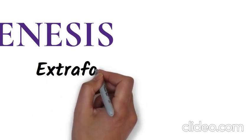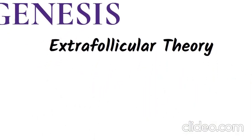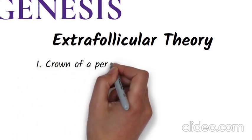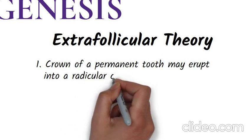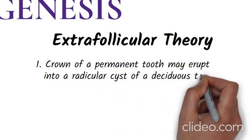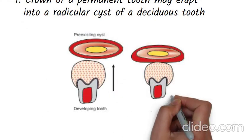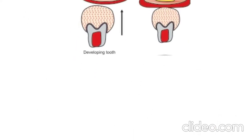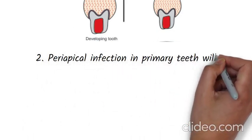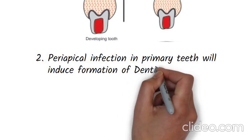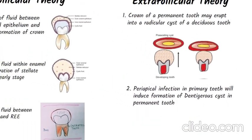Extra-follicular theory: the crown of a permanent tooth may erupt into a radicular cyst of a deciduous tooth. Additionally, periapical infection in primary teeth can induce the formation of a dentigerous cyst in the permanent tooth.